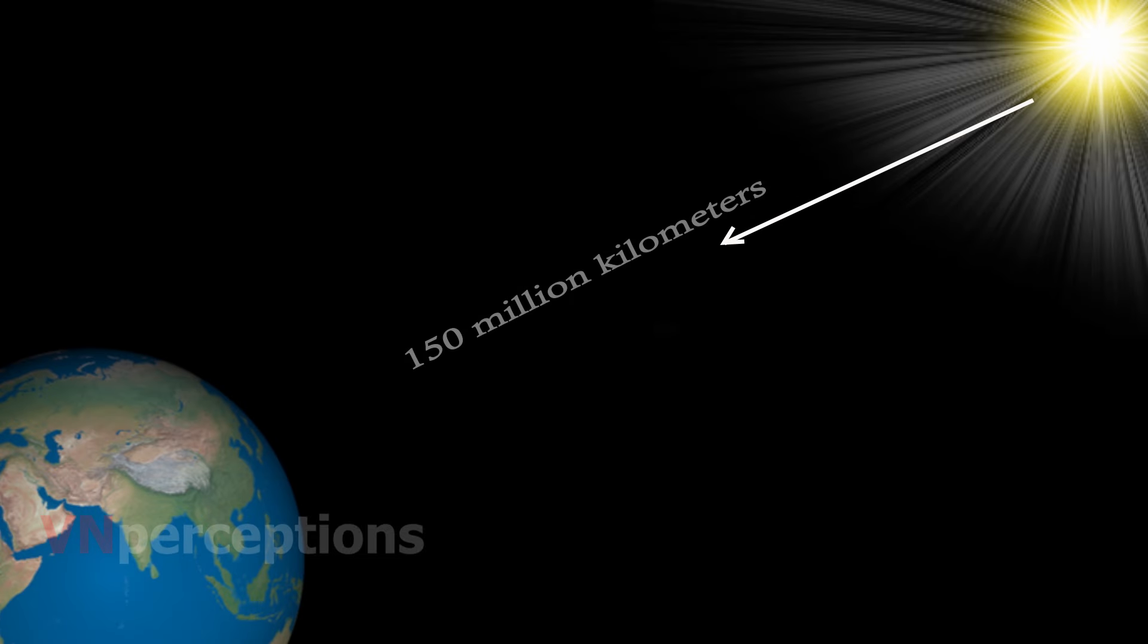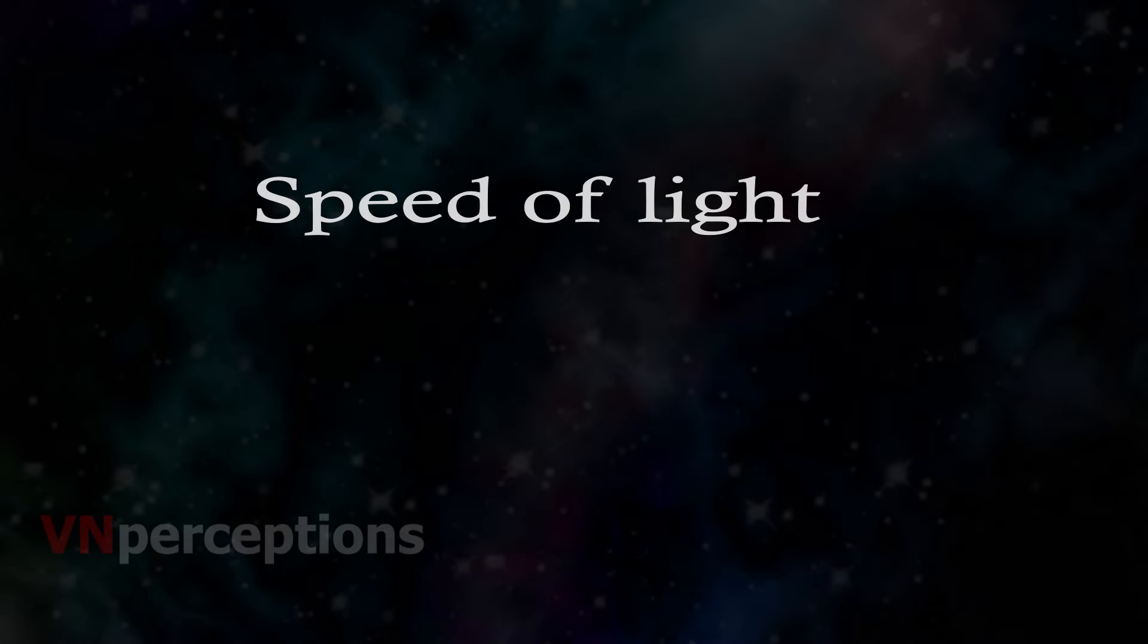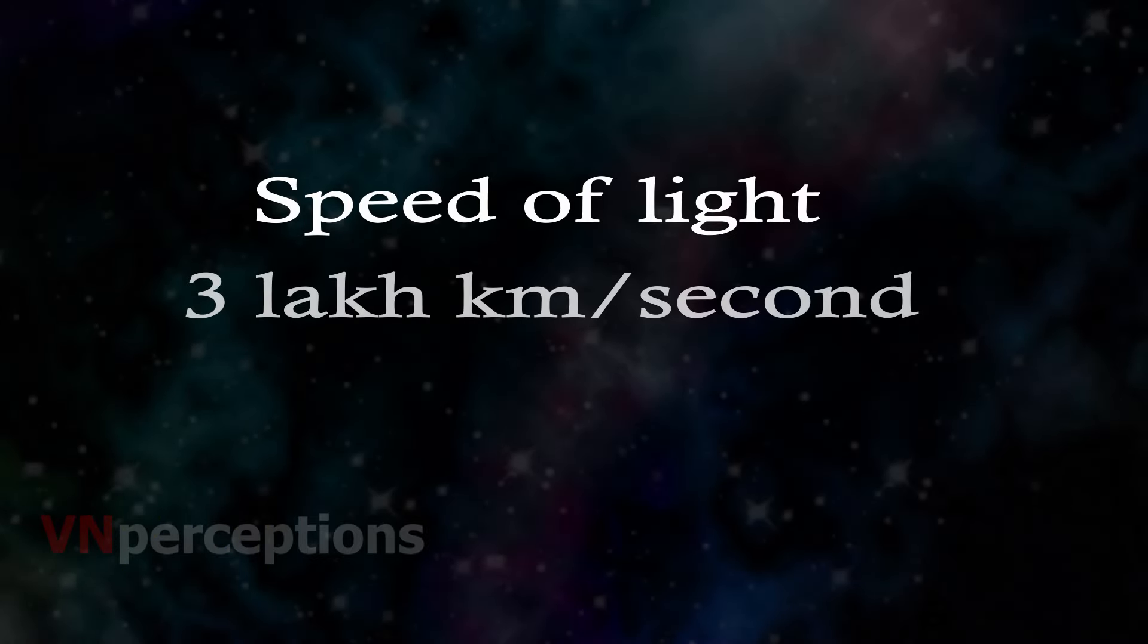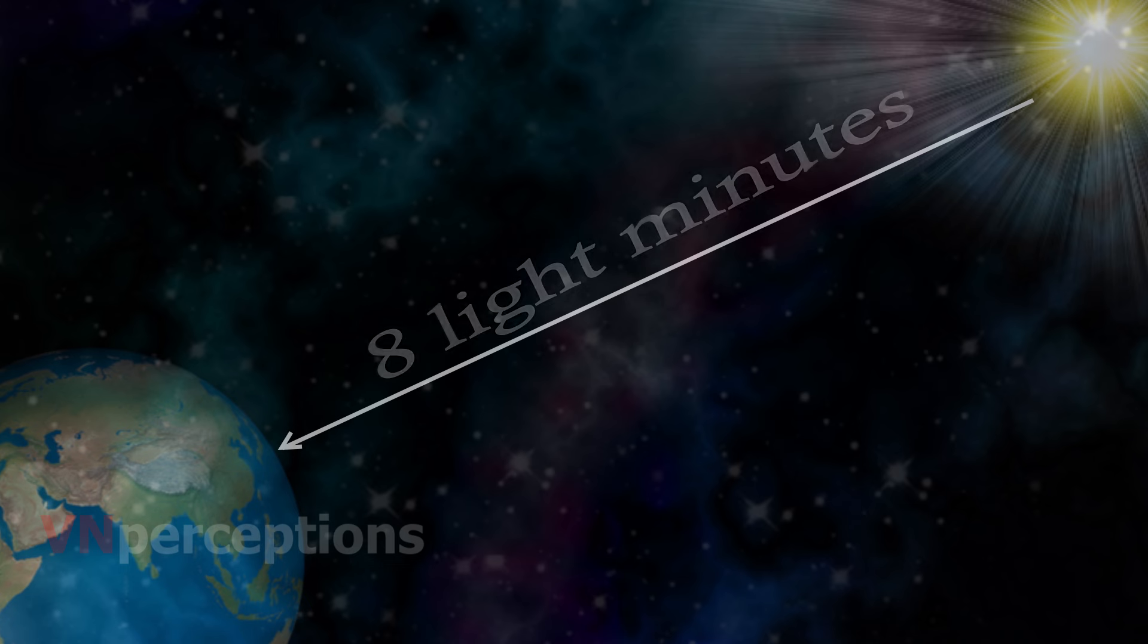The sun is nearly 150 million kilometers away from the earth. The distance between celestial bodies are expressed in light years. It is a distance travelled by light in one year. The speed of light is about 3 lakh kilometers per second. Thus, the distance of the sun from the earth may be said to be about 8 light minutes.